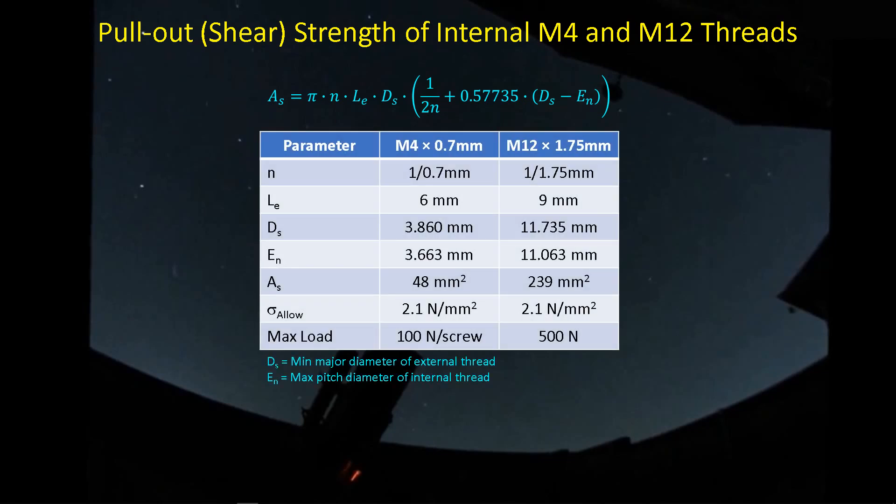Now, for the two types of threads we have in the AM5N counterweight support plate, we have the M4 threads that the four screws that plug in around the corners. We have the M12 counterweight bar. And then we have these parameters I pulled out of some documentation about threads. We have the pitch, one over the pitch, one over 0.7 or one over 1.75 millimeters. This is the length of engagement, how much of the thread on the screw or the counterweight bar is actually engaged with the threads in the counterweight support plate or the mount body. And then we have some dimensions here for the major diameter of the external thread and pitch diameter of the internal thread. And then finally, we can plug those numbers into the formula. And this is what we come up with for the available area that's loaded by either the screws or the counterweight bars.